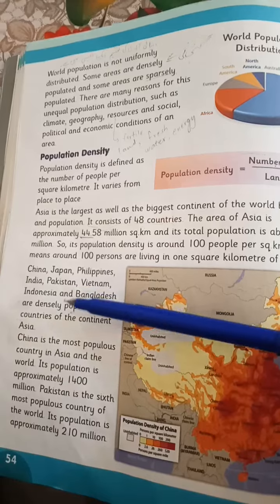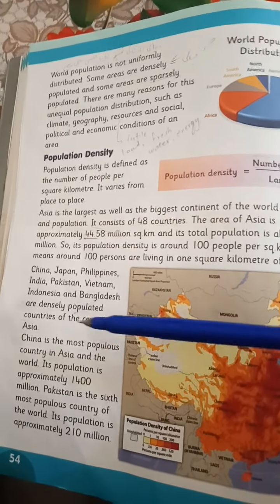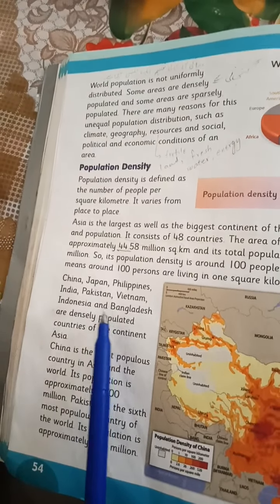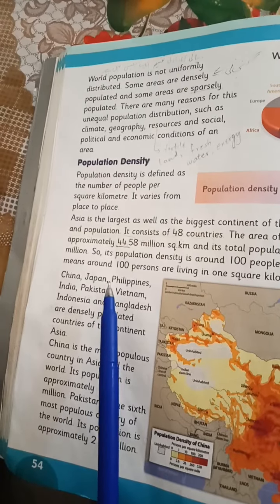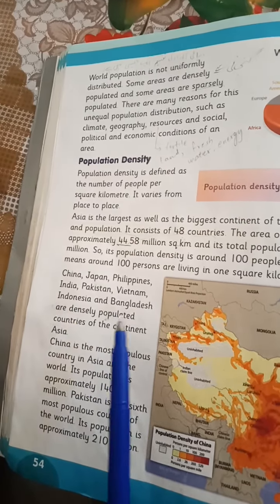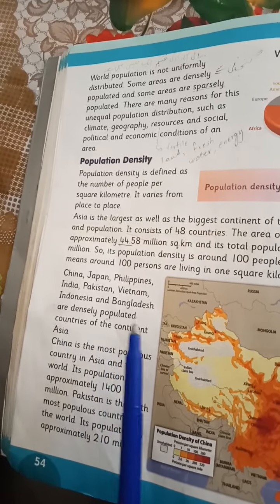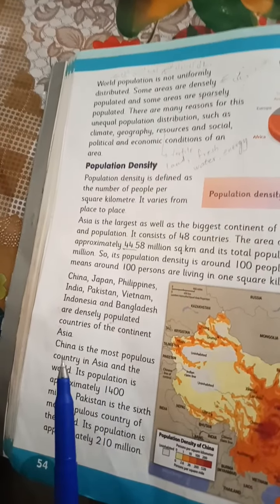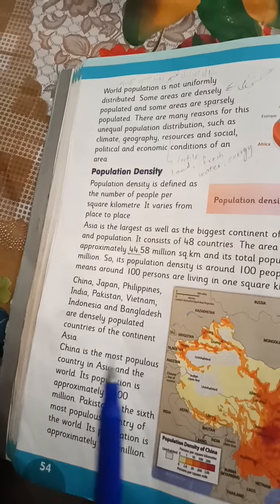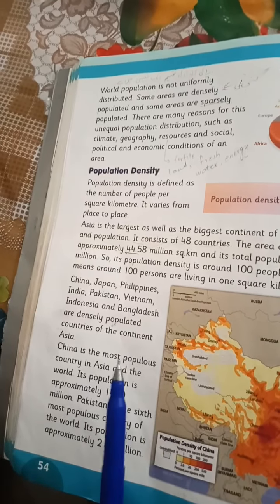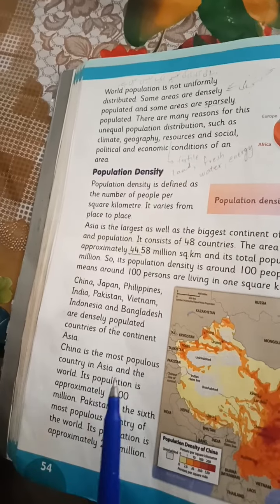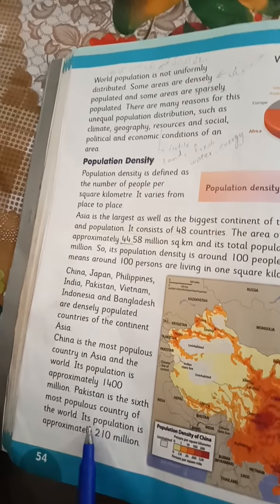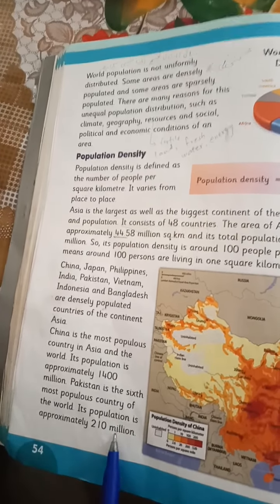China, Japan, Philippines, India, Pakistan, Vietnam, Indonesia, and Bangladesh are densely populated countries of the continent Asia — you have to learn and remember all these country names. China is the most populous country in Asia — underline this line. China has the highest population in Asia and in the world, with a population of approximately 1400 million. Pakistan is the sixth most populous country of the world, with a population of approximately 210 million.